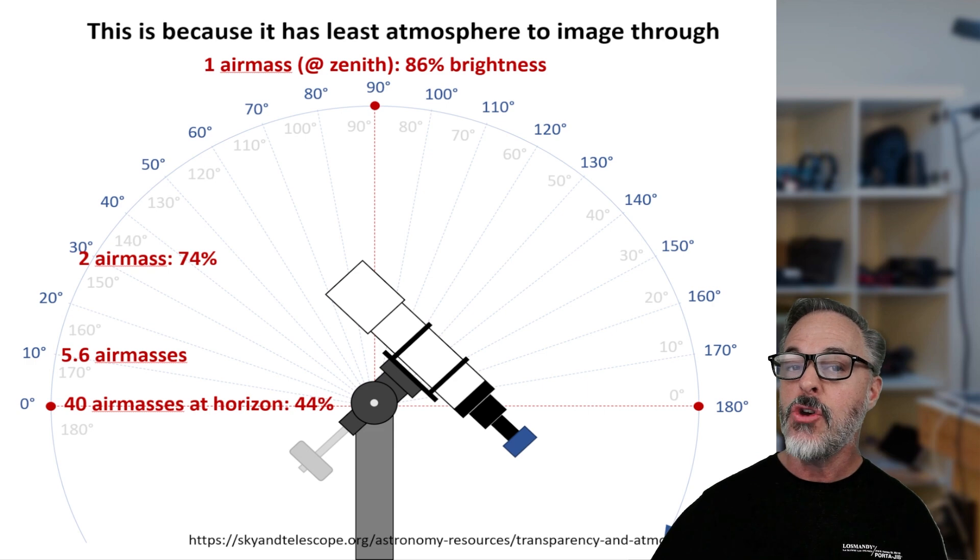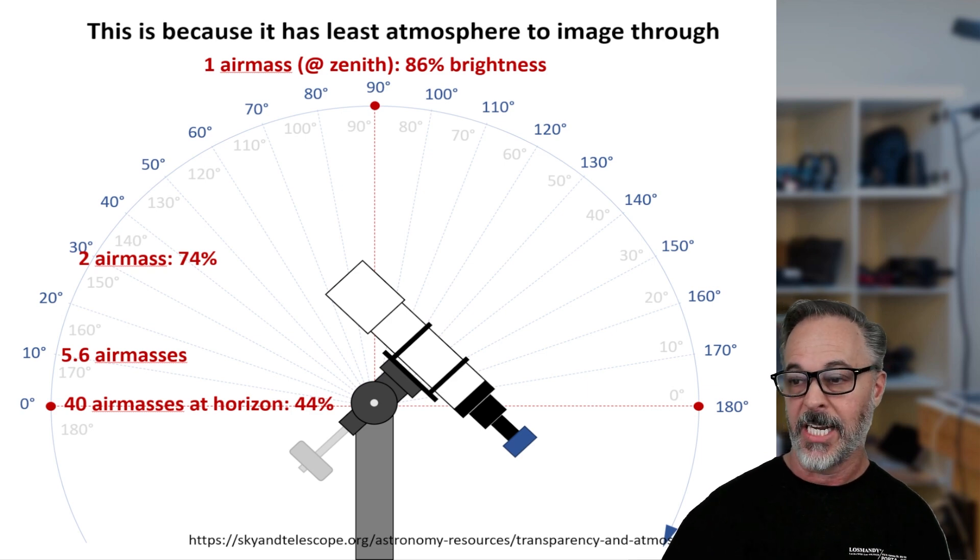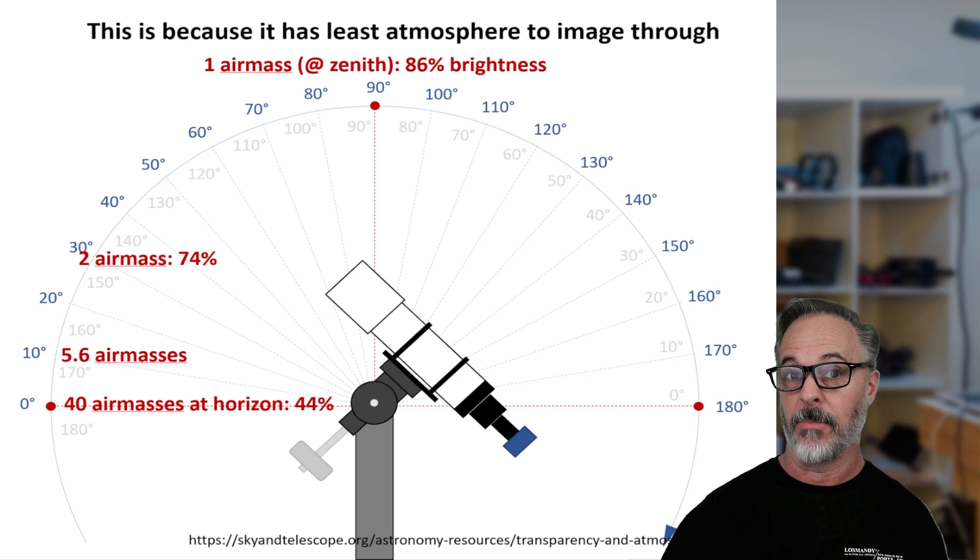At 10 degrees, it's 5.6 air masses. And at the horizon, it's a huge 40 air masses. So your target, if you're shooting at the horizon is going to be 40% as bright as if you're shooting at the zenith. That is a huge number. And that really speaks to why we want to maximize our time at the meridian.